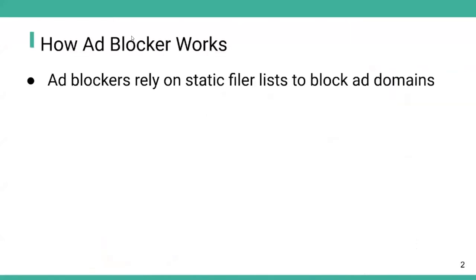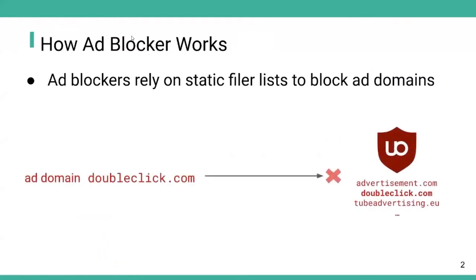First, we explain how most adblockers work. Adblockers rely on static filter lists to block ad domains. The filter list consists of rules that cover ad domains and trackers. For example, if the browser tries to send a request to ad domain doubleclick.com, it will be blocked because the domain is in the filter list.